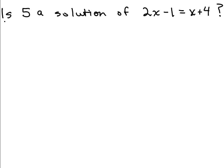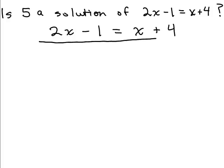How about you try this one: is 5 a solution of 2x minus 1 equals x plus 4? Write down the equation, underline the entire thing, and draw a line under the equal sign. Simplify the left-hand side down to a single number and simplify the right-hand side down to a single number after plugging in 5 for the variable. Go ahead and try that.